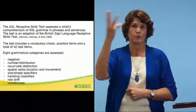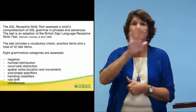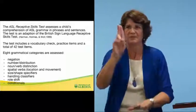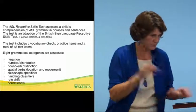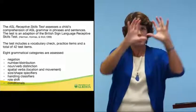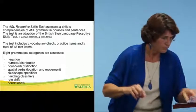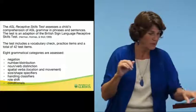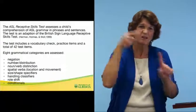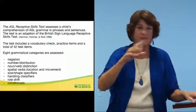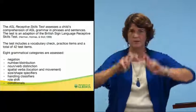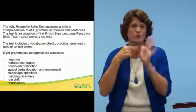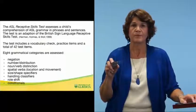The receptive skills test was designed by researchers at the University of Manitoba. The eight grammatical categories assessed are: negation, number distribution, noun and verb distinction, spatial verbs, size and shape specifiers, handle classifiers, role shifting, and conditionals — looking at whether the child can identify those specific features of ASL grammar.